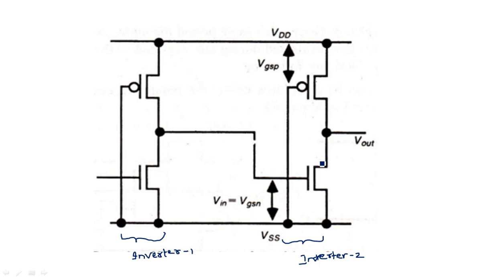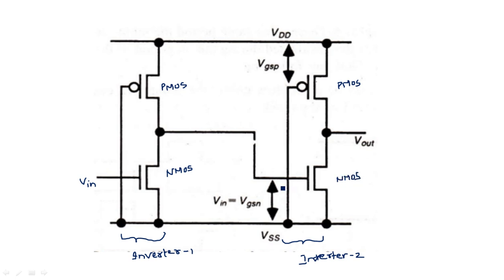In the circuit, the PMOS transistor has its input grounded (gate at 0V) and the NMOS transistor receives the input signal. In the second stage, the PMOS transistor is again grounded and the NMOS transistor input equals the output of the first stage. We are going to calculate the pull-up to pull-down ratio for this network.